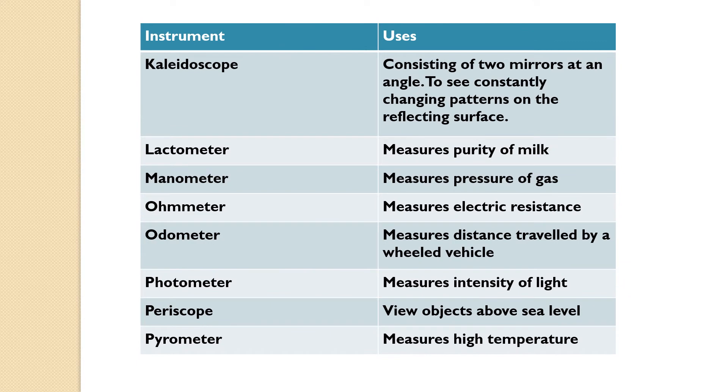Next is kaleidoscope. It consists of two mirrors at an angle. We can see color patterns on a reflecting surface. Lactometer is to measure the purity of milk. Manometer measures pressure of gas. Ohmmeter is to measure electric resistance.